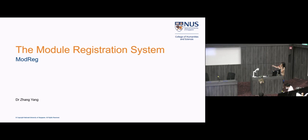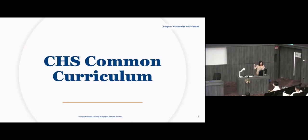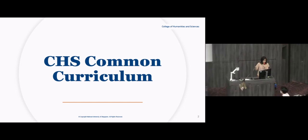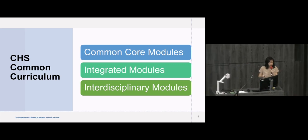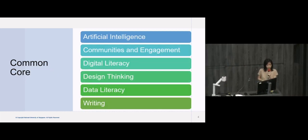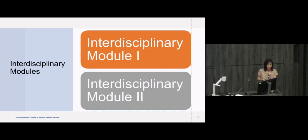Today we're going to be talking about the module registration system which is called MOTREG. This is going to be the system that you're going to use every semester to select your modules. First I just want to quickly recap the common curriculum in CHS. We have three components: the common core (six modules), the integrated modules (five modules), and the interdisciplinary modules — that's the 13 modules that everyone in CHS has to take.